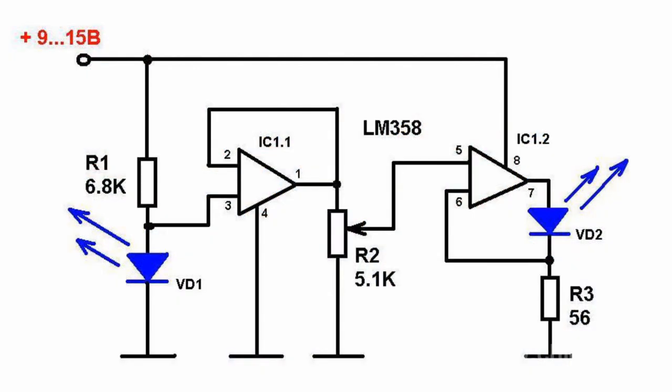Here is another current regulation circuit based on an operational amplifier. One half of the chip acts as a voltage follower and the other half regulates current flowing through VD2.